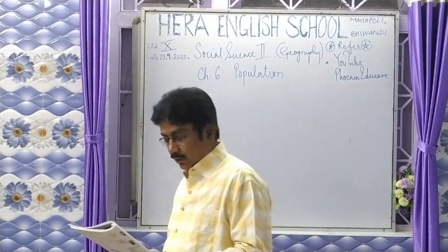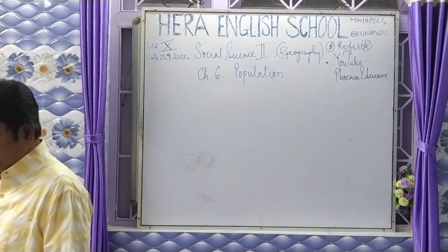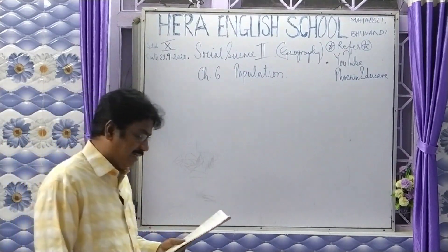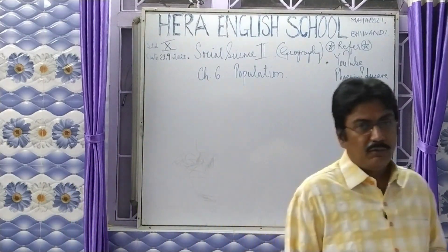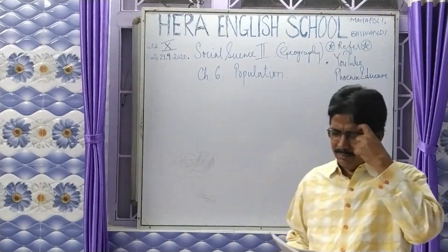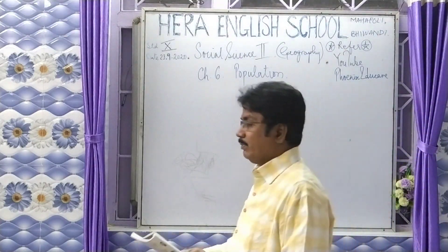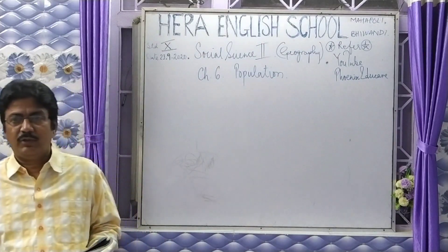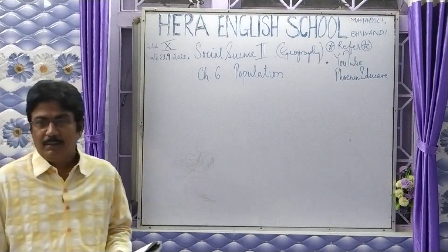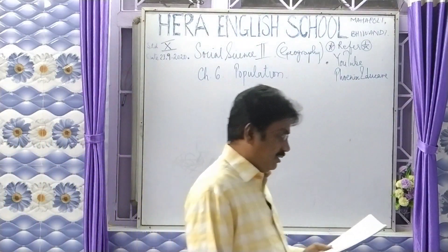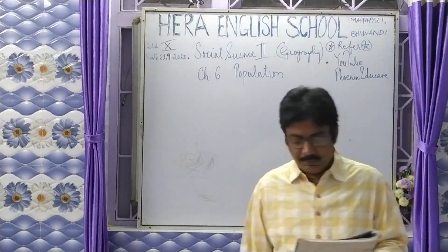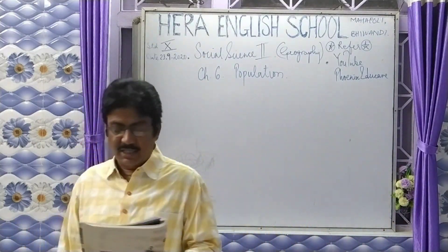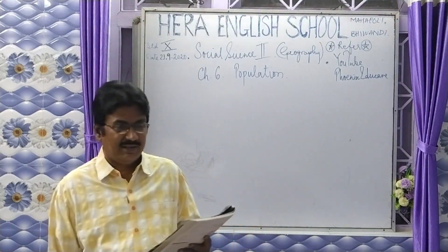Life expectancy is the average number of years a person born in a country is expected to live. Obviously, you can never precisely predict life expectancy for any individual — just as you cannot predict rainfall — but on average, we Indians live for 68 years, whereas Brazilians live for 75 years.